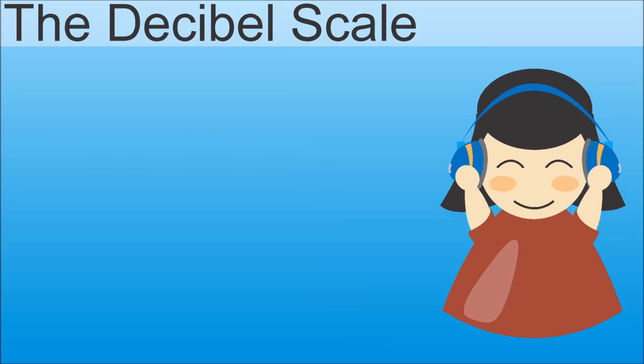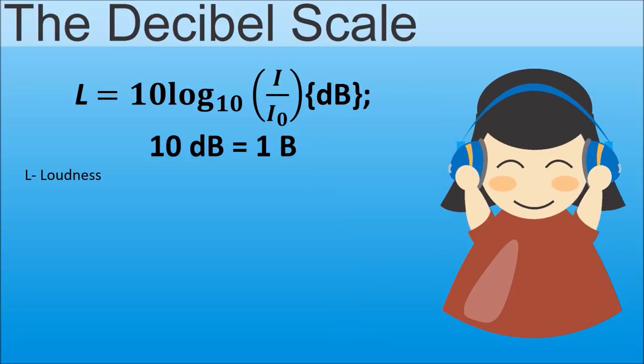Because of this, we typically measure loudness in decibel, a ten times smaller unit than bell. The decibel scale is set up so that zero decibel represents the loudness of the quietest thing a human can hear.